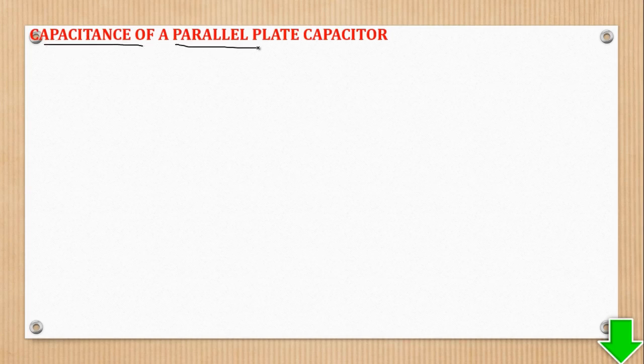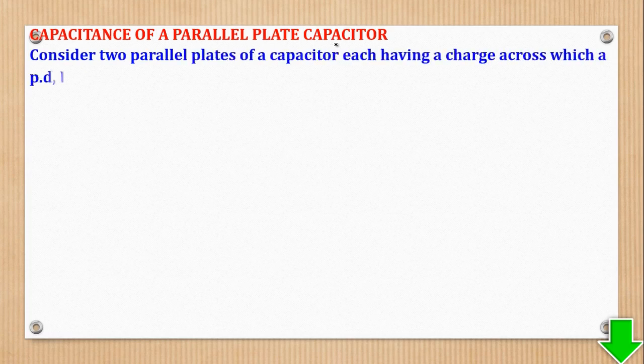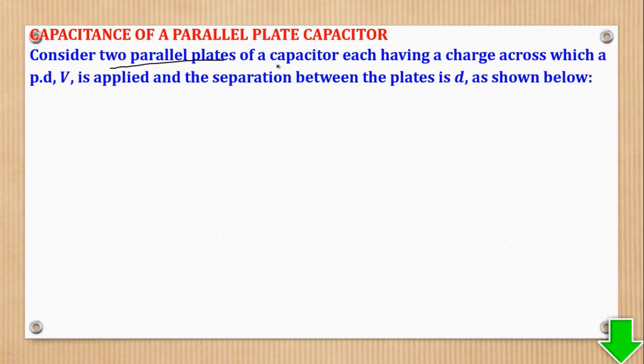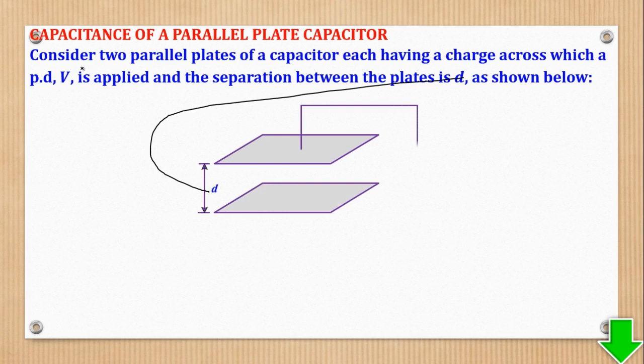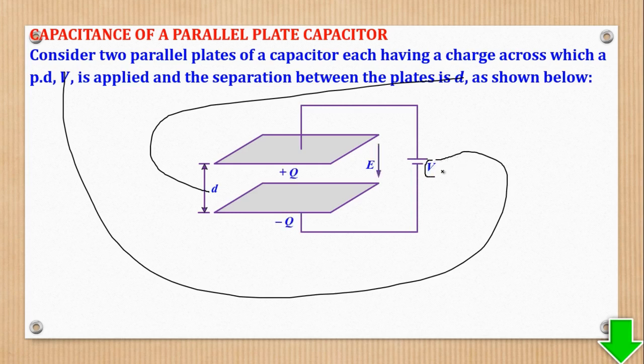So that was capacitance of a capacitor. Now we shall go to capacitance of a parallel plate capacitor. So in this case, what we shall consider, we shall consider 2 parallel plates of a capacitor, each having a charge across which a PD V is applied, and the separation between the plates is D as shown below. So that means we shall need to make some illustration. So that would be one plate and this is also another plate separated by distance D and connected to a PD V.